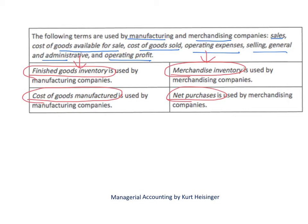If we are a manufacturing company, cost of goods manufactured relates to the cost of goods that are completed and transferred out of work in process over into finished goods inventory. For retail companies, net purchases represents the cost of goods that are purchased from other companies rather than being produced internally.